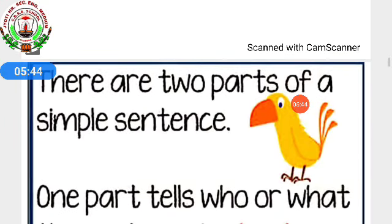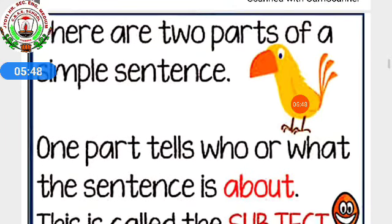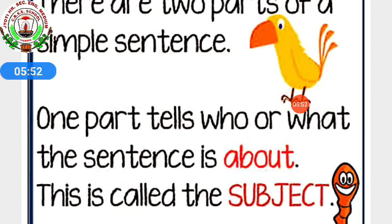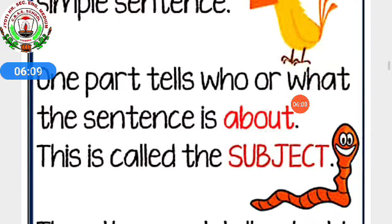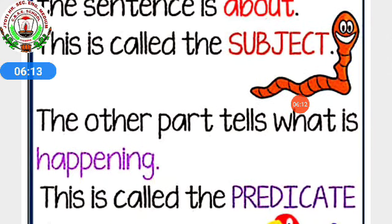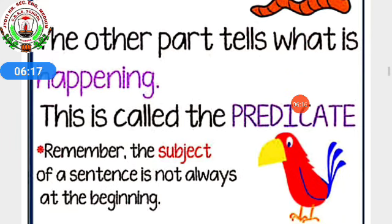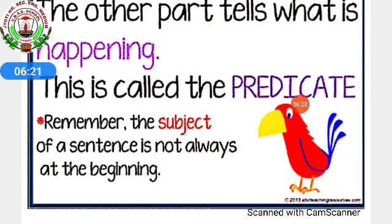There are two parts of a simple sentence. One part tells who or what the sentence is about — this is called the subject. The other part tells what is happening — this is called the predicate. Remember, the subject of a sentence is not always at the beginning. Many times in exercises we have seen that the subject can also come at the end of the sentence. We have to identify it while reading.